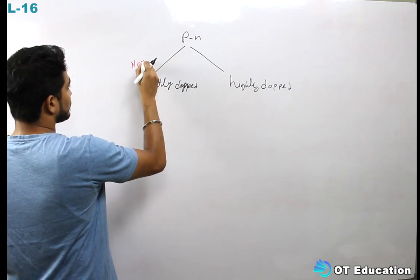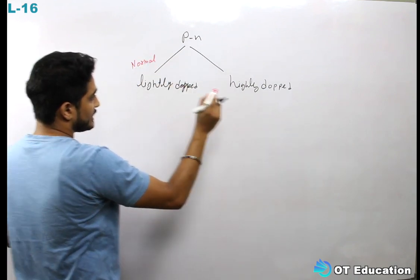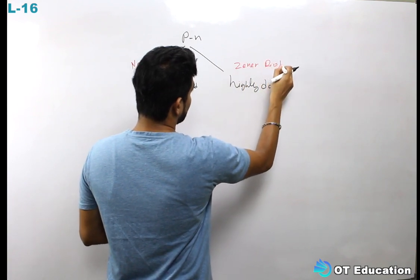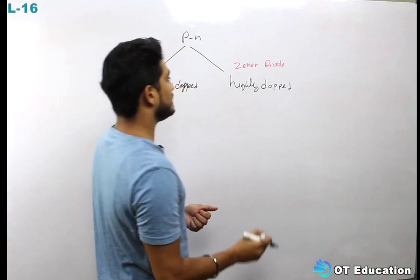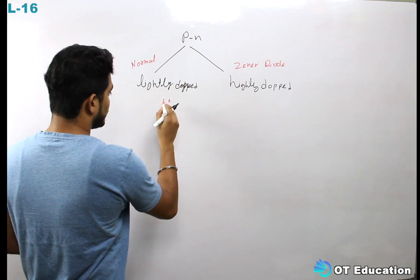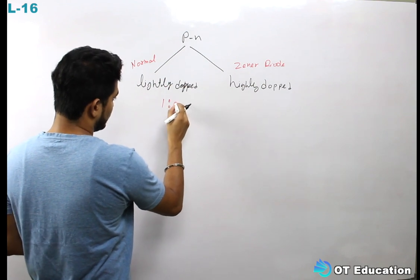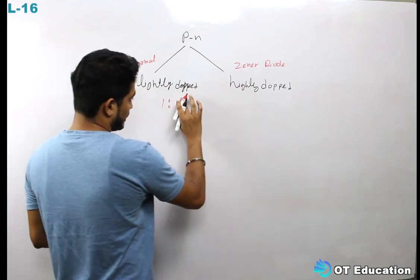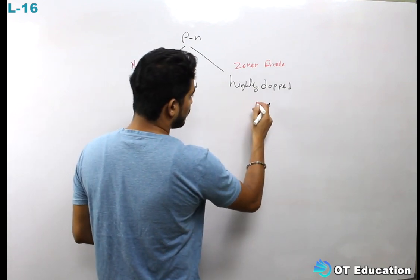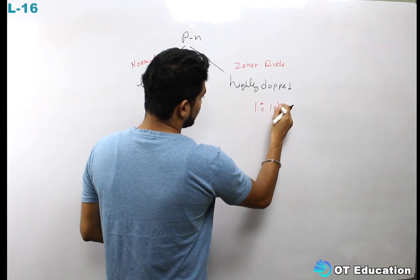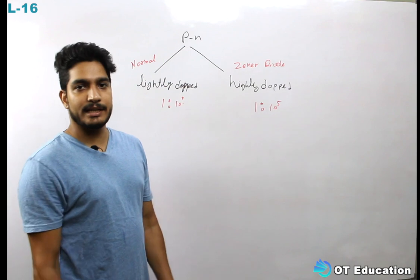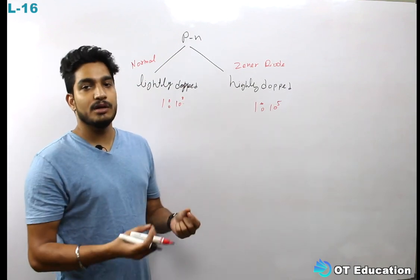This is the normal diode, and this is the Zener diode. This is the basic difference between a normal diode and a Zener diode. The normal diode's doping concentration is 1×10^8. The highly doped one is the Zener diode. We don't have to go into too much detail, but there is a basic concept related to doping.